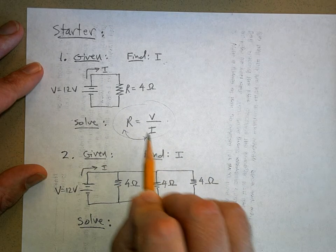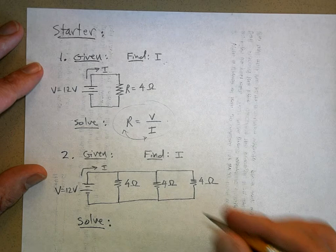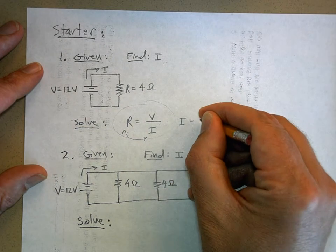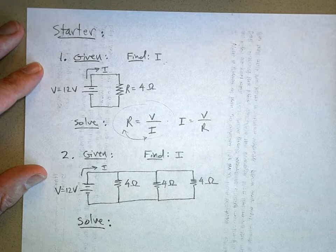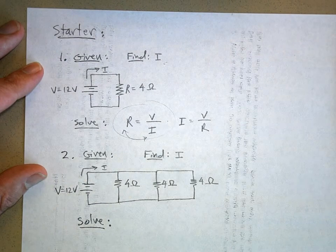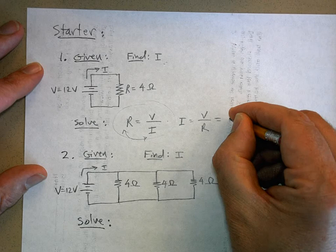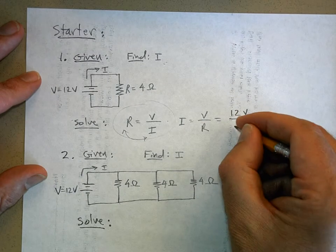The current is equal to voltage divided by resistance. So this is 12 volts divided by 4 ohms, and that's going to be 3 amps.